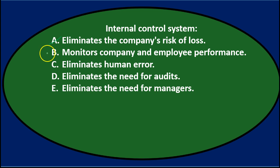B. Monitors company and employee performance — that could be an internal control, so we'll keep that. C. Eliminate human errors — again the word eliminate is problematic; it might reduce human errors through checks and balances, but not eliminate them. D. Eliminates the need for audits — it probably doesn't eliminate audits; we might have a better audit with good internal controls, but not eliminate them. E. Eliminate the need for managers — managers are part of the internal control system, so we're not eliminating them. The answer is B: monitors company and employee performance.